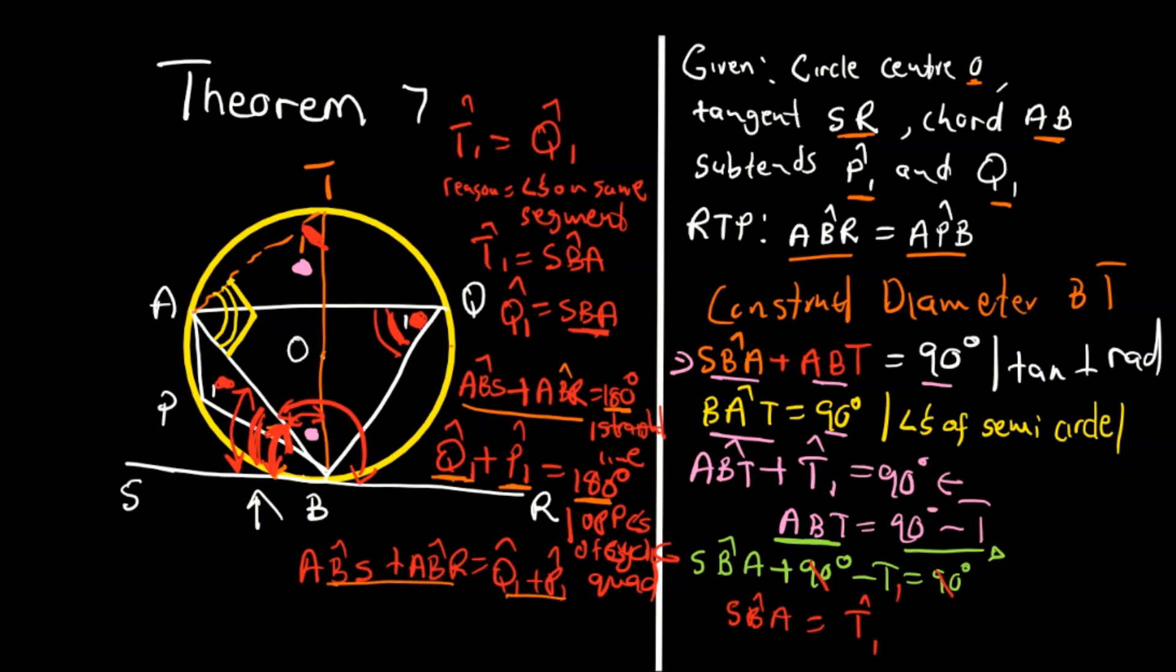So therefore, we can conclude by saying angle ABS is equal to Q1 and angle ABR is equal to P1. So you can conclude that this angle here is equal to this angle here, APR.